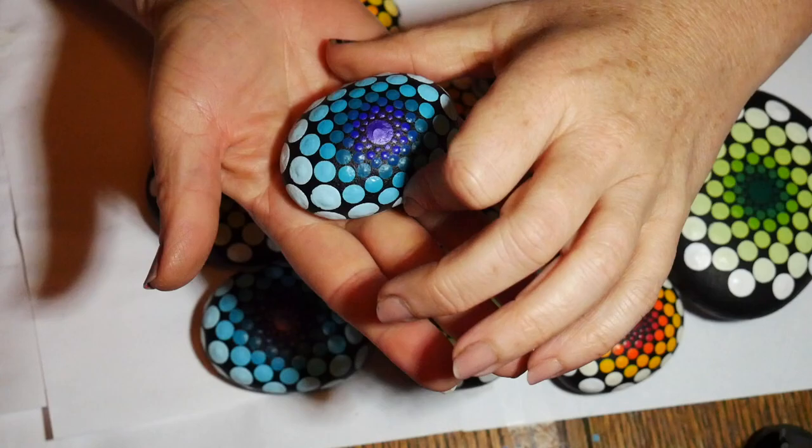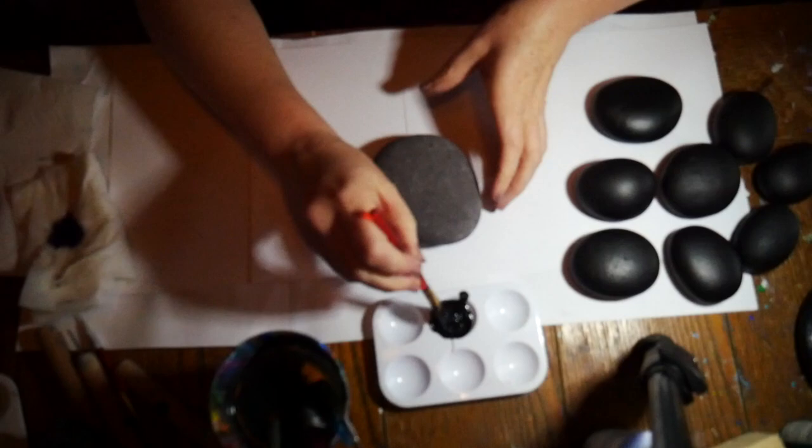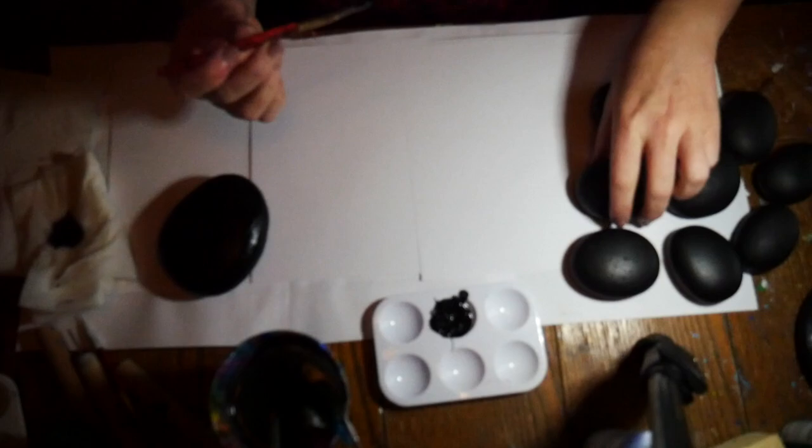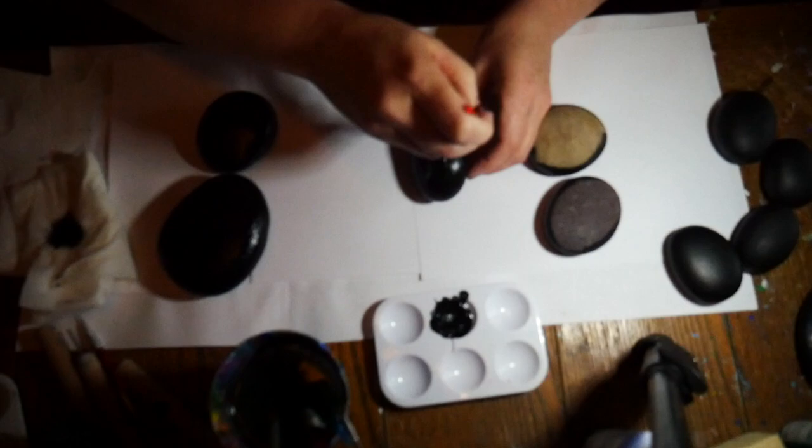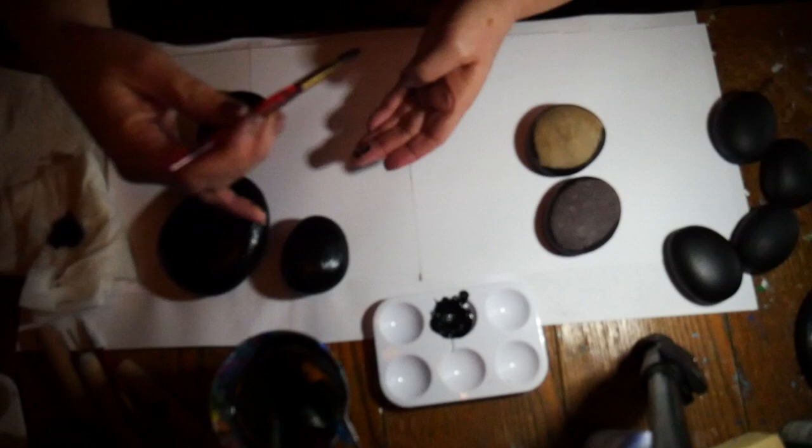These rocks aren't quite flat and aren't quite round - the egg shape is really fun to work with. I had set some of these rocks aside because I couldn't use them for my other mandala work. I painted them black on one side to let that dry and then painted the other side.